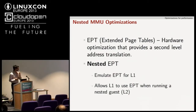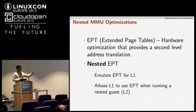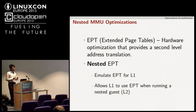Shadow page tables were slow because of the number of times translation has to happen — from guest virtual address to guest physical address, then guest physical address to host physical address. The number of exits increases a lot more in that case.